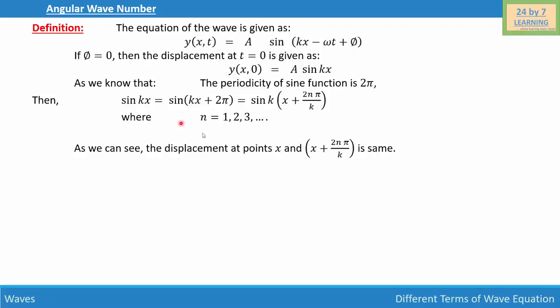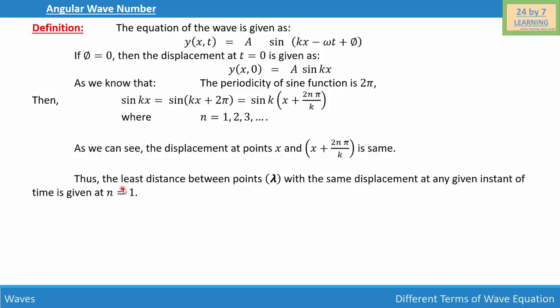And these two terms are equal. So basically, we can say that the displacement is same. And if that is the case, then we can write the least distance between points, which is basically the wavelength lambda, with the same displacement at any given instant of time is given as n is equal to 1, which simply means that lambda is equal to 2 pi over k.